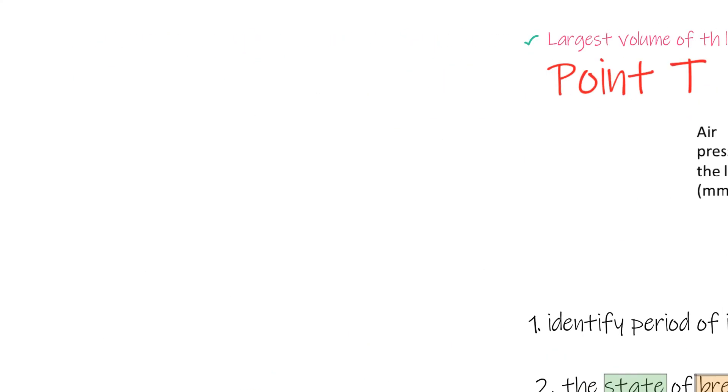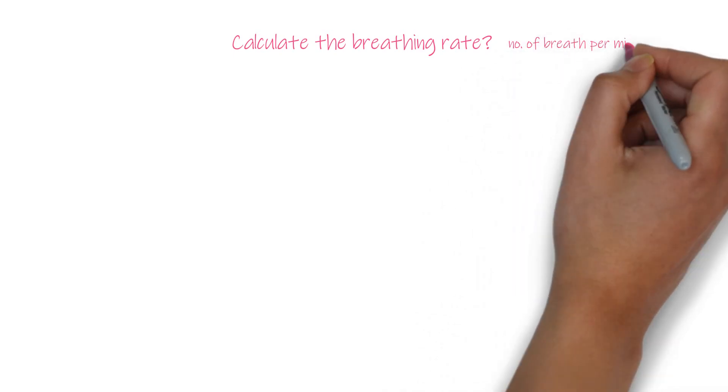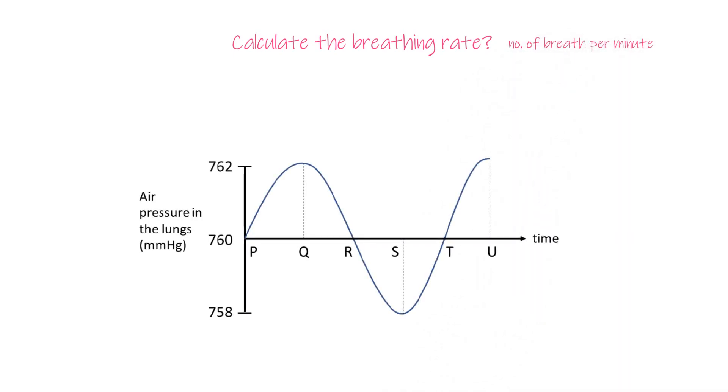You may also need to know how to calculate the breathing rate. The breathing rate is the number of breaths per minute. You need to identify one breath, then see how much time it takes. In this curve, PT is one breath. If PT takes 3 seconds, the breathing rate will be 20 breaths per minute.